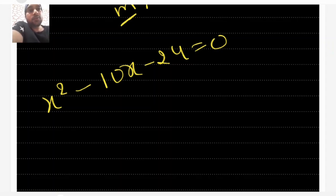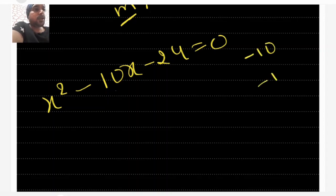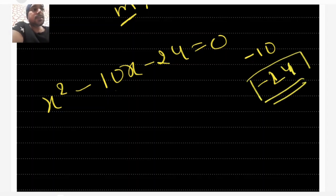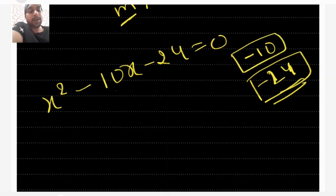We have to split b into two parts — we need to find two numbers such that their sum equals -10 and their product equals -24.